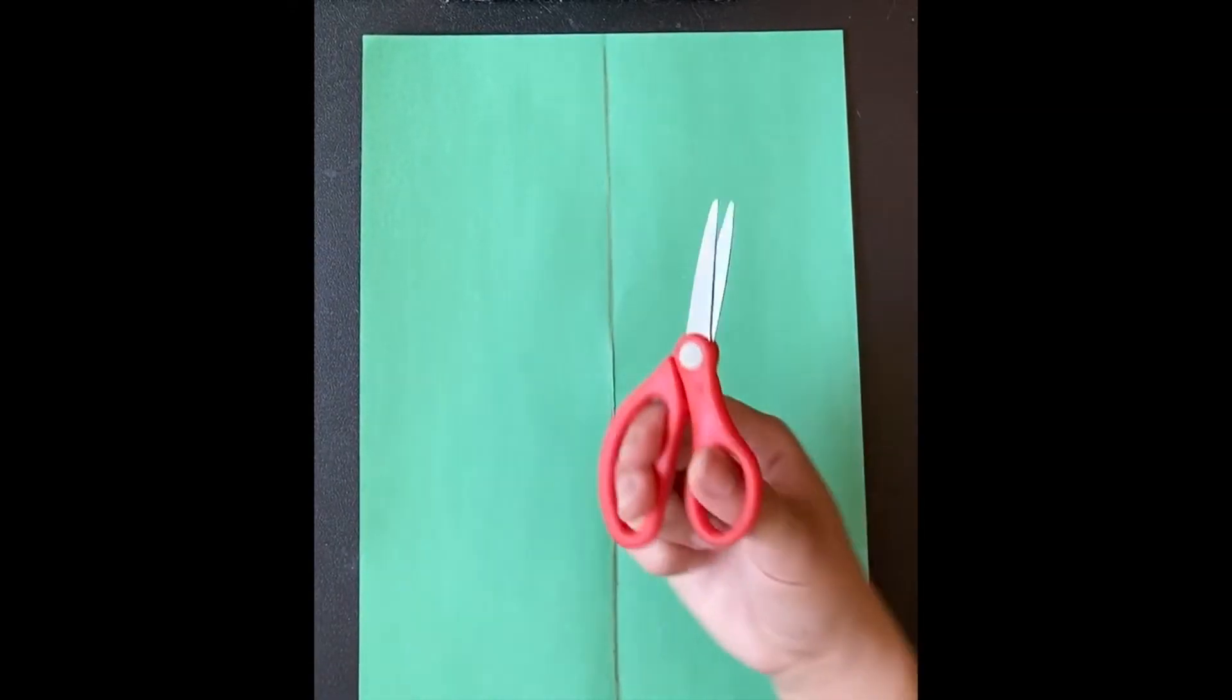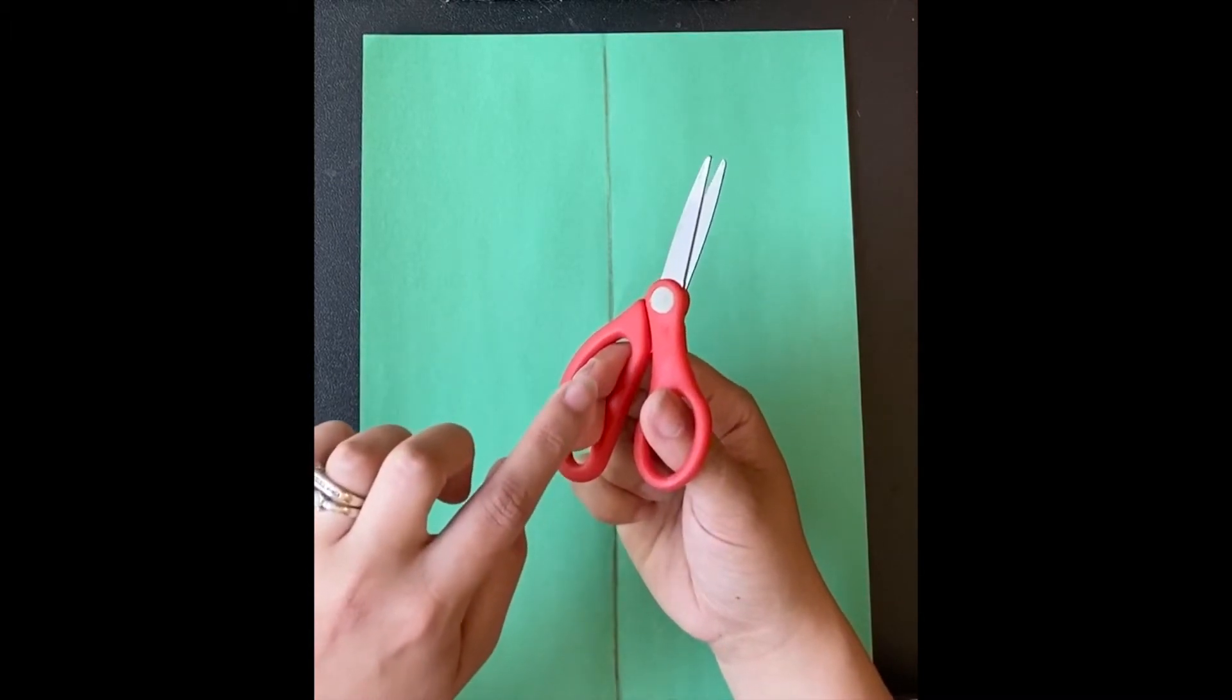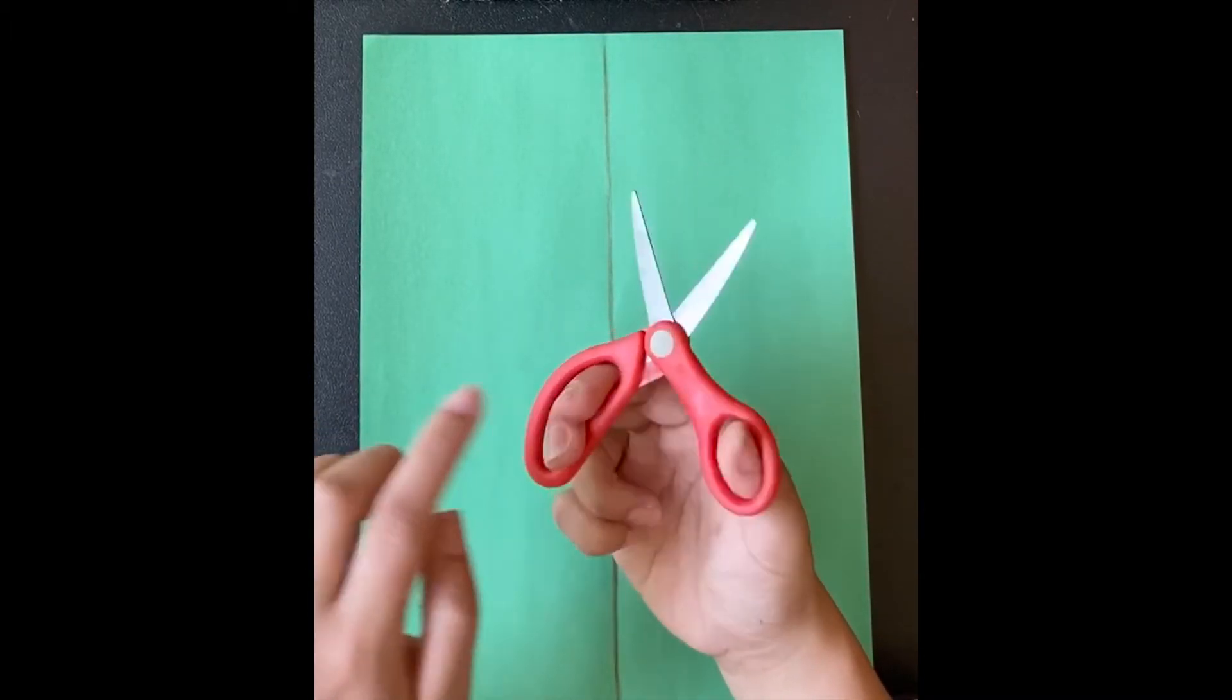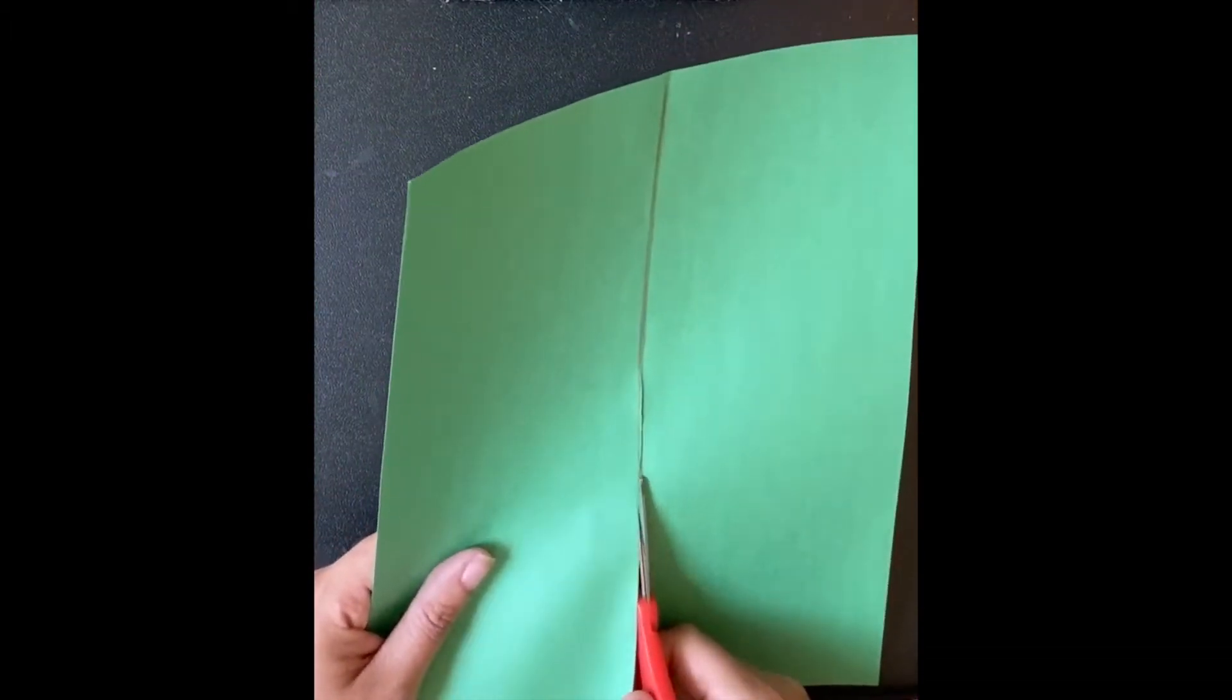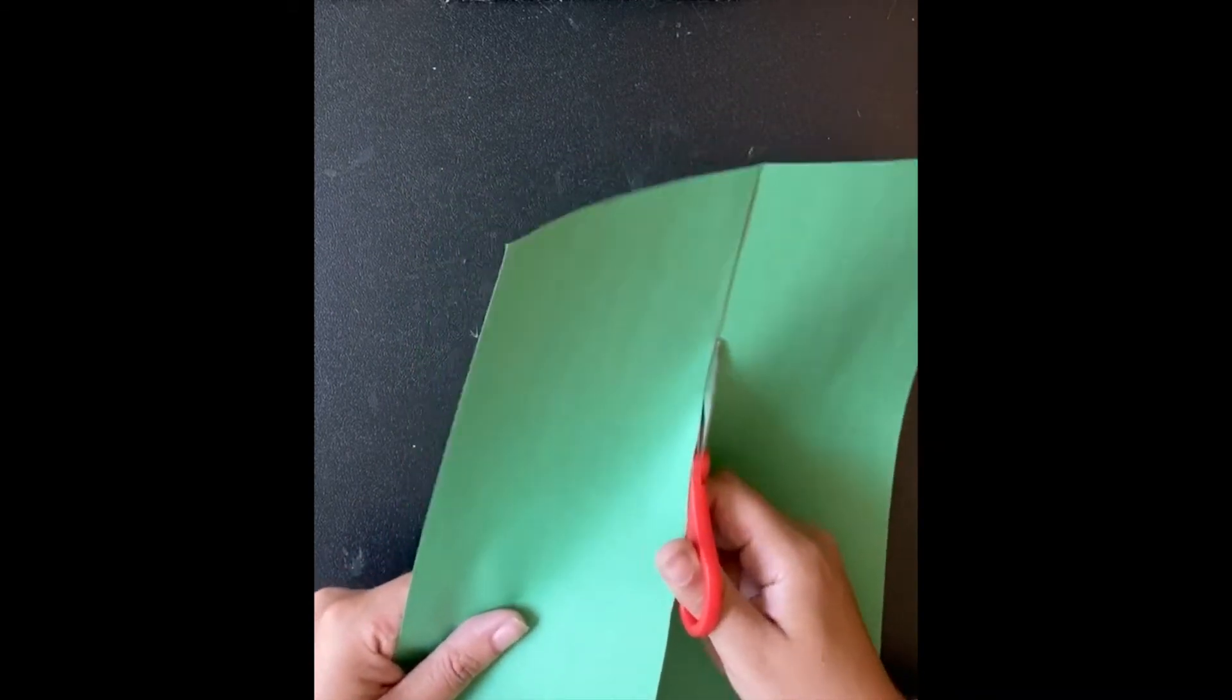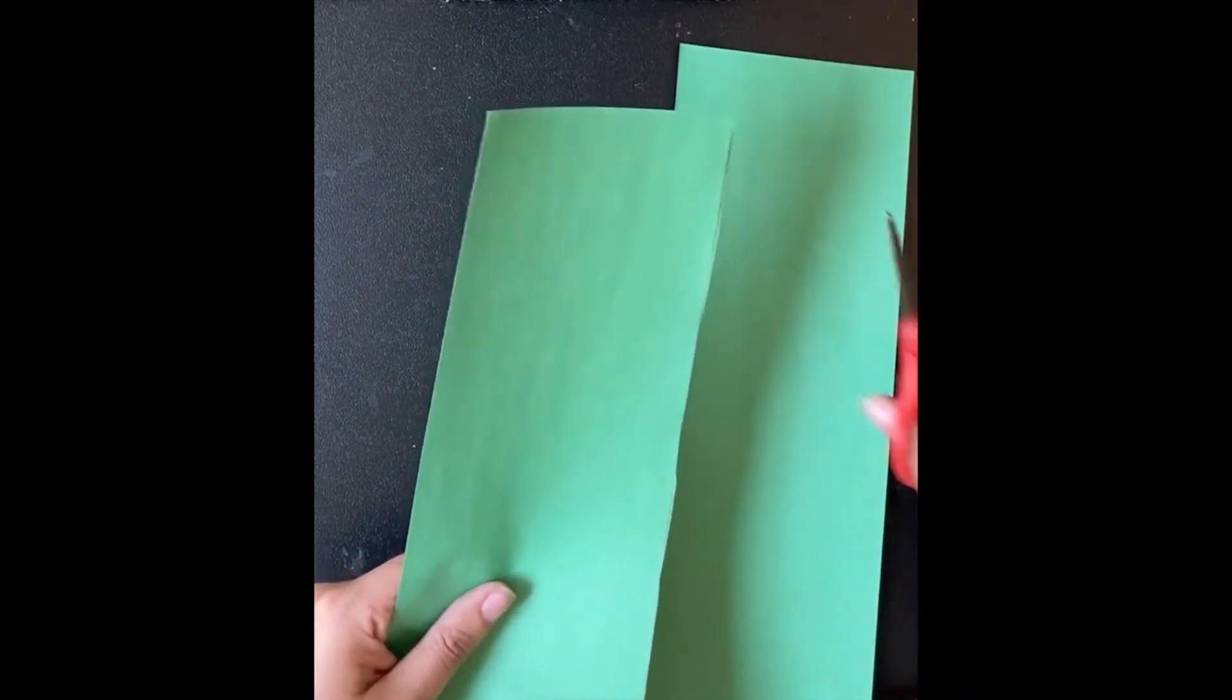Now get your scissors ready. Remember two fingers on the bottom and thumb on top. Open and close, chomp, chomp, chomp. One hand holds the paper and the other cuts. We're going to cut across that line to make two pieces of paper.